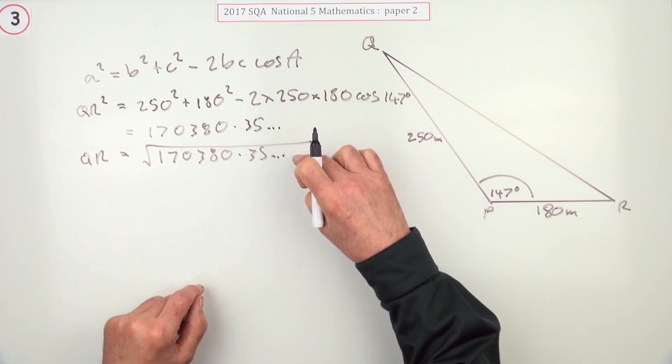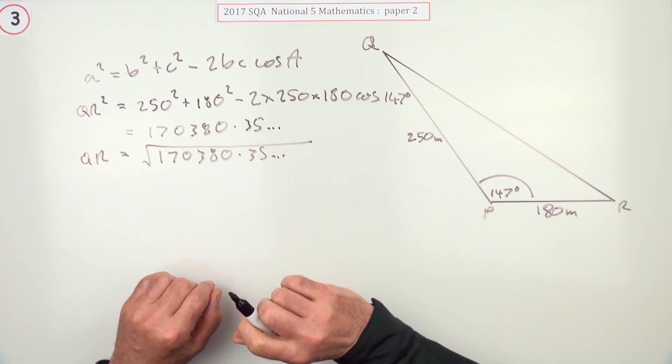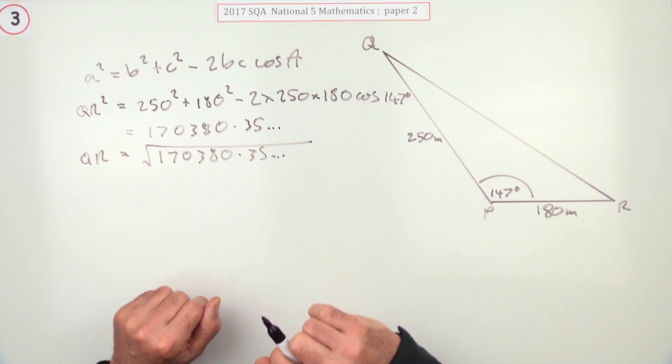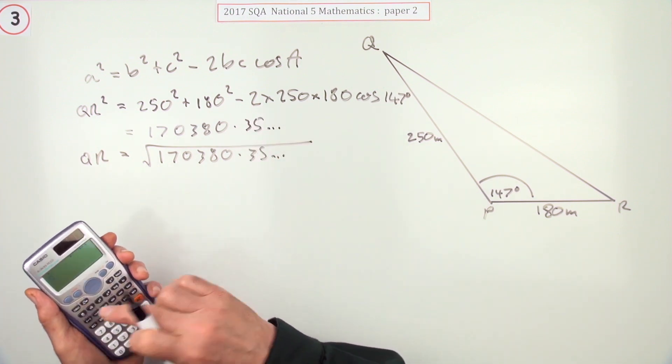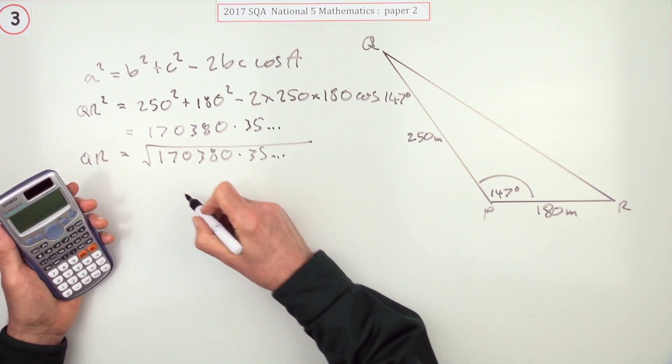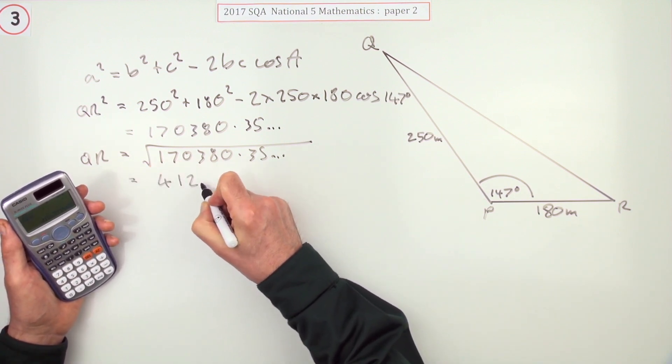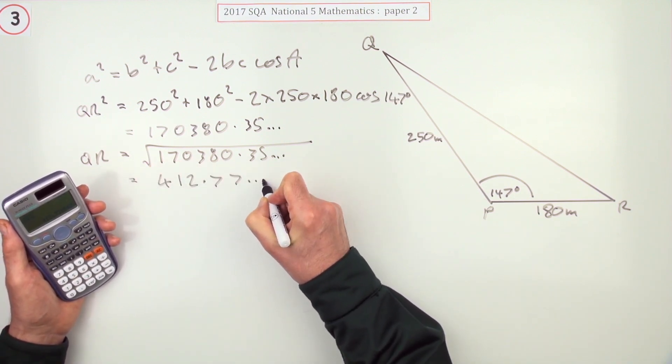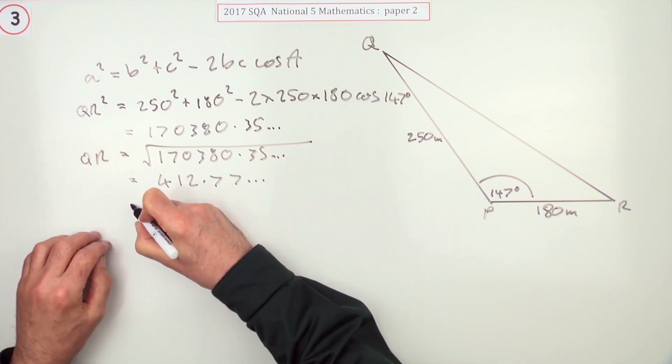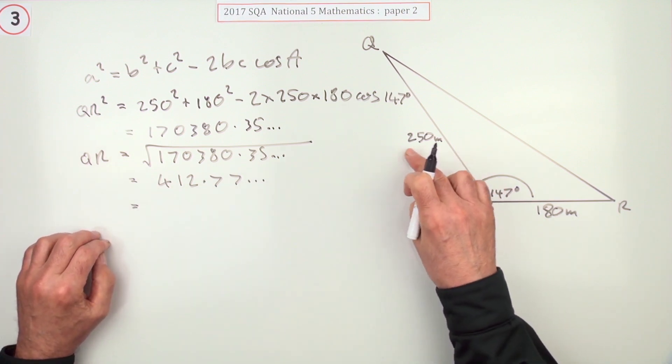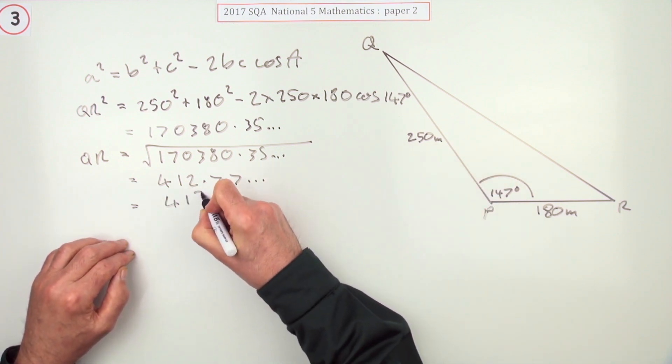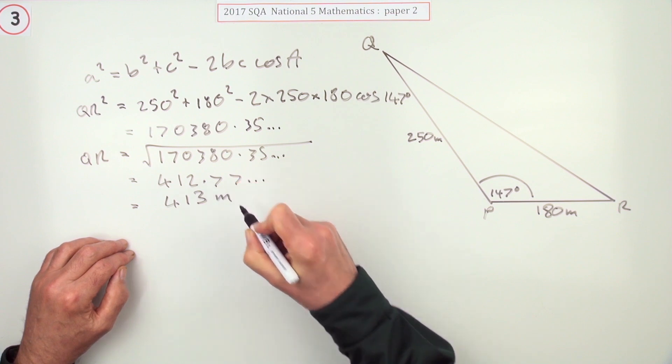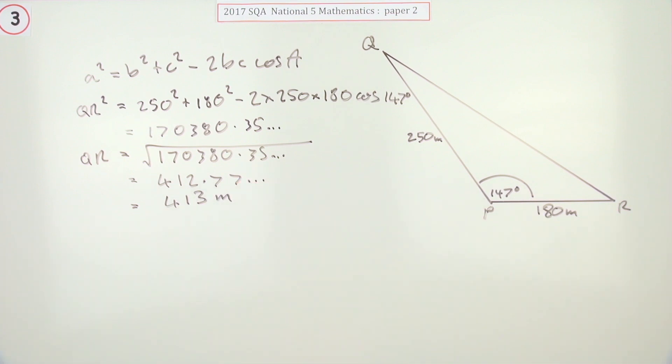Now I've shown I've not done any rounding with these dot dot dots, ellipses I think they're called, so that means I'm just using my answer function here and you get 412.77 and so on. Looking at them, they've got looks like maybe two figures possibly three, so I'll just go for the three: four one, and that seven bumps it up to three meters for that side QR.